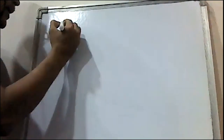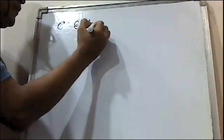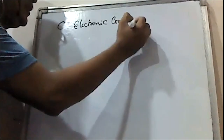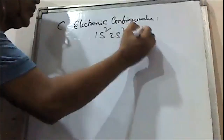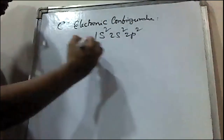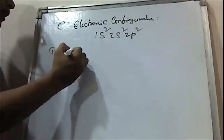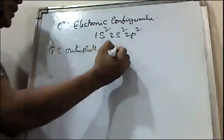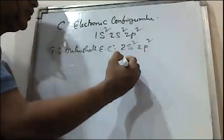So, carbon's electronic configuration. The electronic configuration of carbon is 1s2, 2s2, 2p2. In the ground state, the outer shell electronic configuration of carbon is 2s2, 2p2.